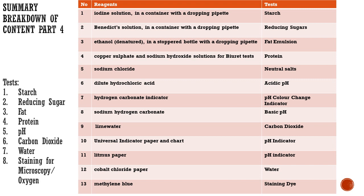Lastly, this table shows the reagents which will be given during the practical test and how they correspond to the respective testers. The practical will revolve around testing for starch with iodine, reducing sugars with Benedict's solution, fat emulsion with ethanol, protein with Biuret test, pH testers such as litmus paper and universal indicator, carbon dioxide with lime water, water or moisture with cobalt chloride paper, and lastly methylene blue for either staining for microscopy techniques or as a redox indicator.